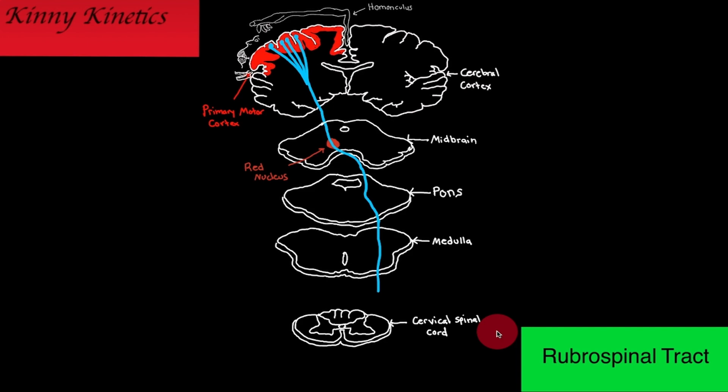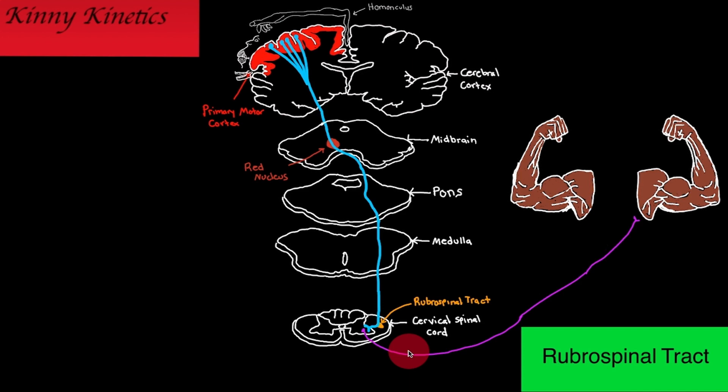Until it enters the rubrospinal tract, which is in the lateral aspect of the spinal cord. Here the signal enters through the rubrospinal tract and synapses with a motor neuron in the ventral horn of the spinal cord. Here the motor neuron in the ventral horn is going to activate the skeletal muscles of the distal limb.